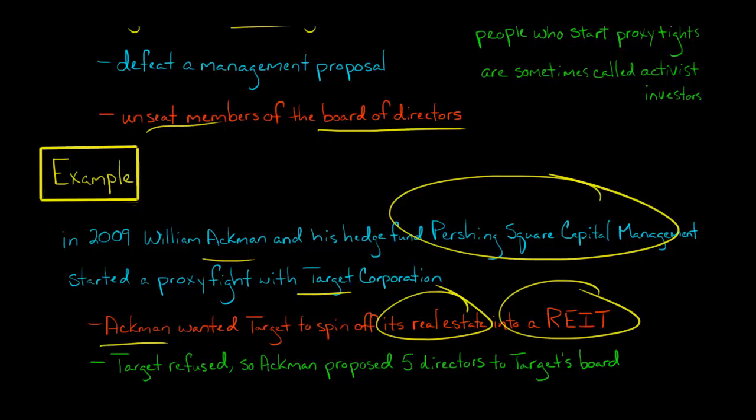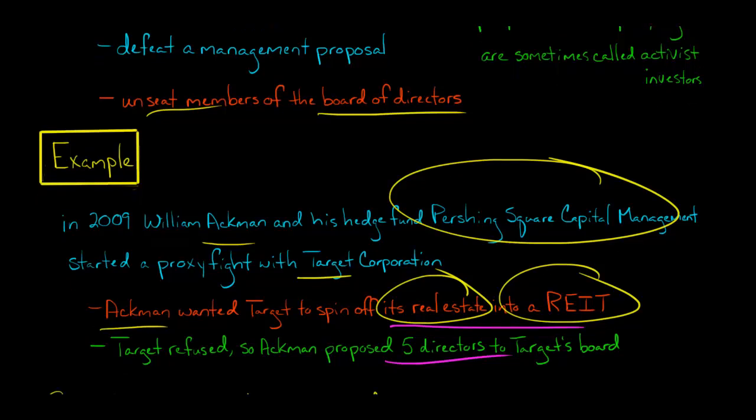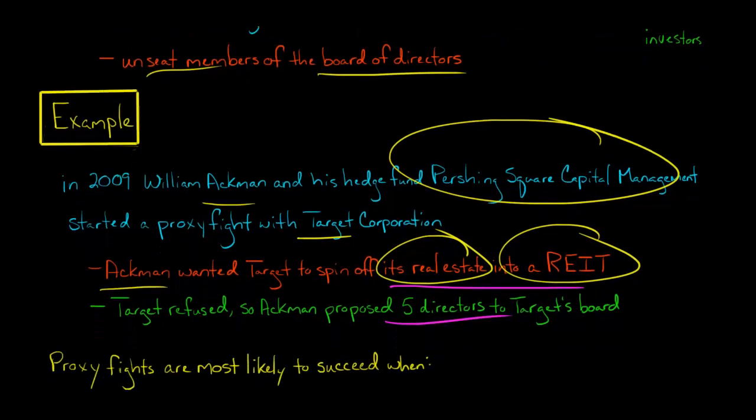They didn't think it was a good idea. So Ackman said, what I'll do is I'll just propose my own slate of directors that they get elected to Target's board. And he's trying to get control of the board so he can get these changes to actually take place. And unfortunately for Ackman, his directors did not get elected. Target's board members were elected. So the management won in that case.